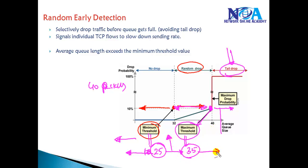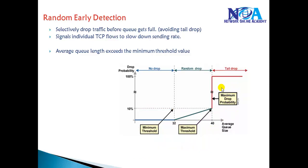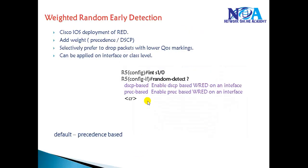Anything exceeding the maximum threshold will trigger tail drop again. We will see how to define these parameters in more detail during the implementation in the next video, and we can change these parameters as needed.